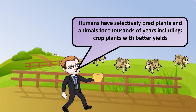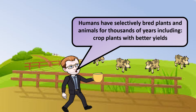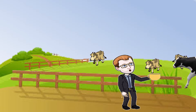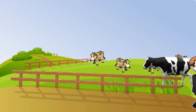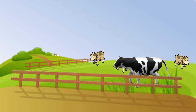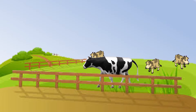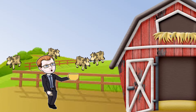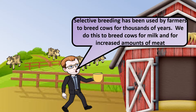We selectively bred a weed and it turned into multiple different types of plants such as broccoli, kale, and other things like that. Selective breeding has been used by farmers to breed cows for thousands of years — we breed cows for milk and to increase the amount of meat on them.